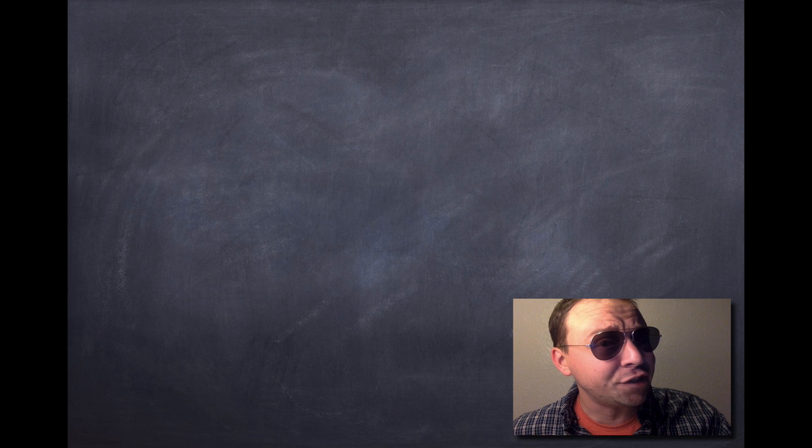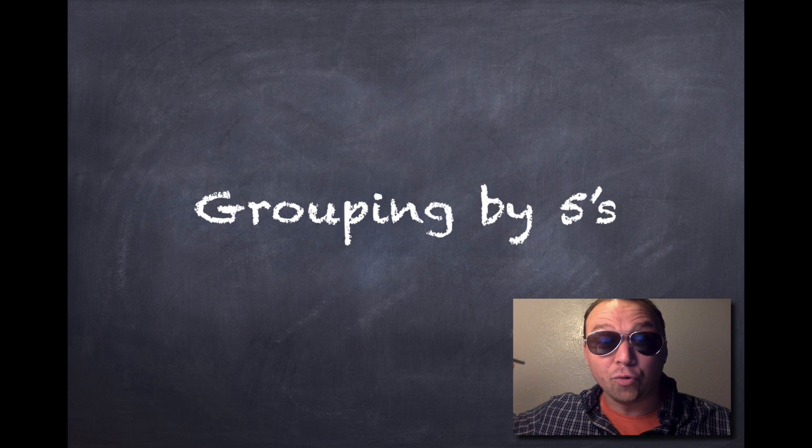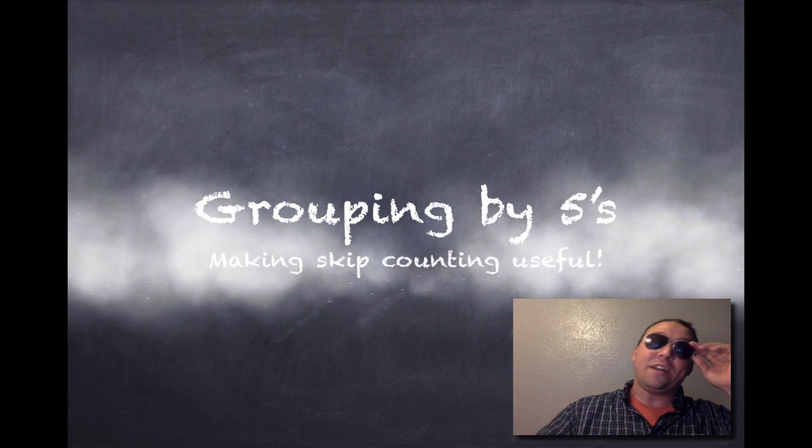Hello scholars, it's I, Mr. C, wearing sunglasses because I have a touch of conjunctivitis. That means pink eye! But that's not going to stop this 21st century educator from teaching you how to group by fives and why that's important.